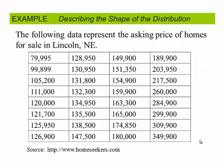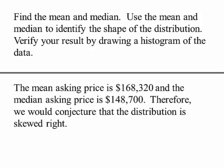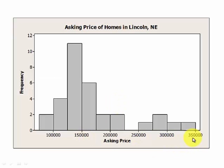Let's look at a data set: the asking price of homes for sale in Lincoln, Nebraska. Find the mean and median, then use them to identify the shape of the distribution and verify by drawing the histogram. The mean was $168,320 and the median asking price was $148,700. Because the mean is larger than the median, we conjecture the distribution is skewed right. Looking at the histogram, we can see a longer tail to the right side — confirming it is skewed right. These higher values have a stronger effect on the mean; the median is more resistant.